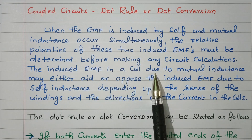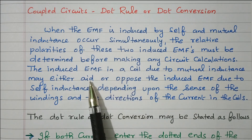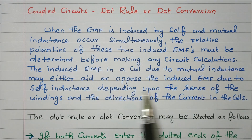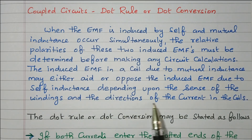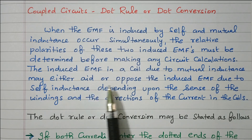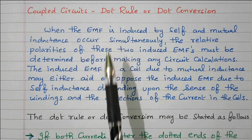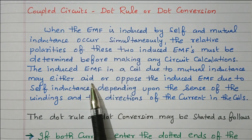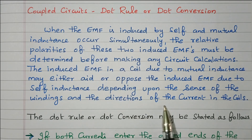The induced EMF in a coil due to mutual inductance may either aid or oppose the self-induced EMF. This depends upon the sense of the winding and the direction of current in the coil. So mutual inductance and self inductance may be added or opposing, depending upon the direction of current. We use the dot rule based on the direction of current to identify whether mutual inductance is added or opposed.